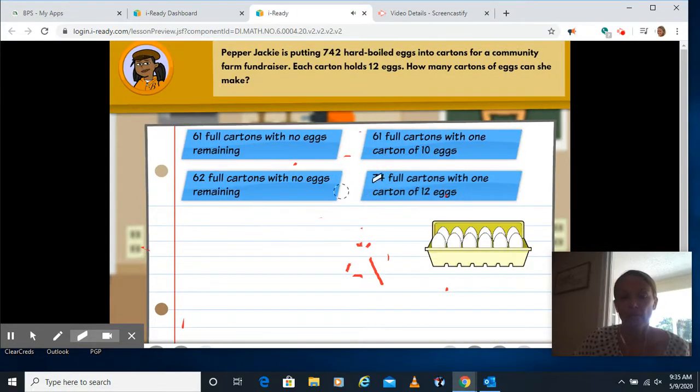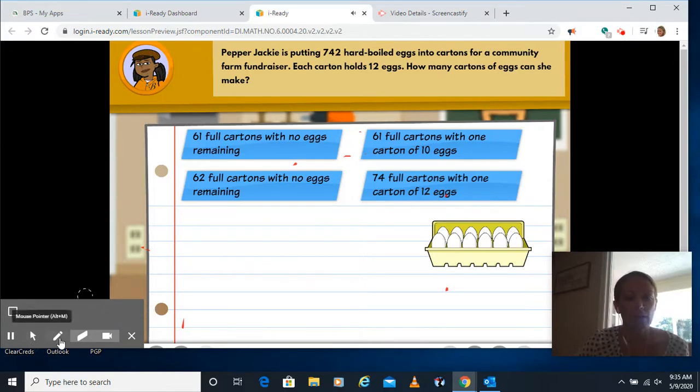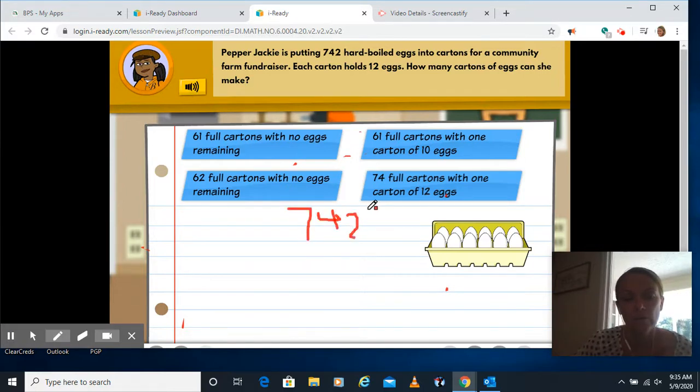Pepper Jackie's putting 742 hard-boiled eggs into cartons for a community farm fundraiser. Each carton holds 12 eggs. How many cartons can she make? So we're going to have to do 742 divided by 12. How many times can 12, well, it can't go into seven. How many times can 12 go into 74?